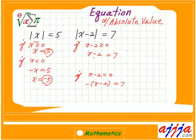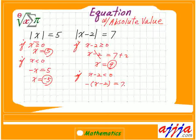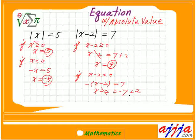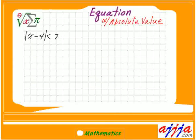Let's solve both of them. You move this one to the right hand side, it's going to be plus 2, so x is 9. What about this one? You can move the negative sign to the right hand side, that's going to be negative 7. So x minus 2 is negative 7. You move this one to the right hand side, plus 2, which gives x is negative 5.